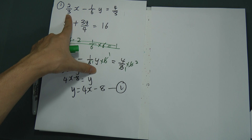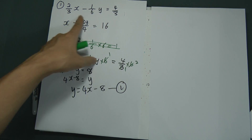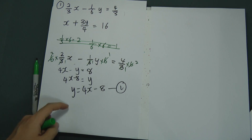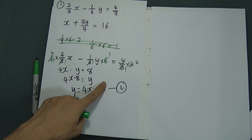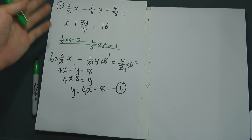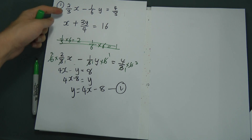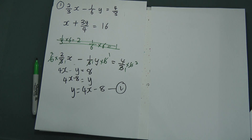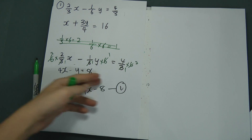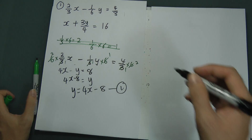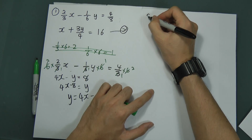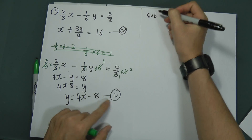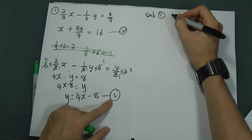See how easy this is once you find the common of the fractions and multiply through — you can easily solve something like 4x minus y equals 8. Otherwise, converting one by one would be very complicated. Now I need to substitute equation 1 into equation 2.